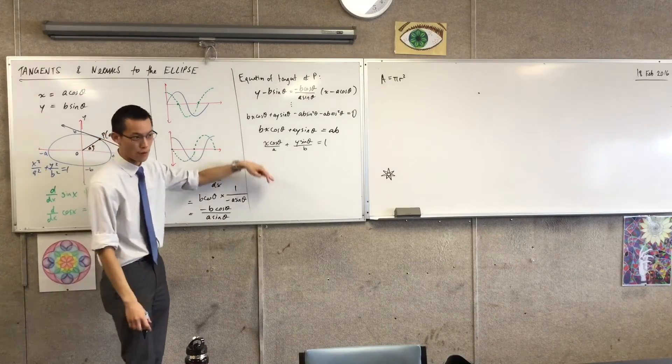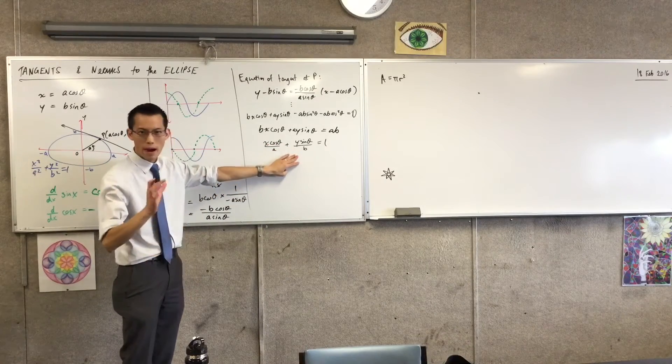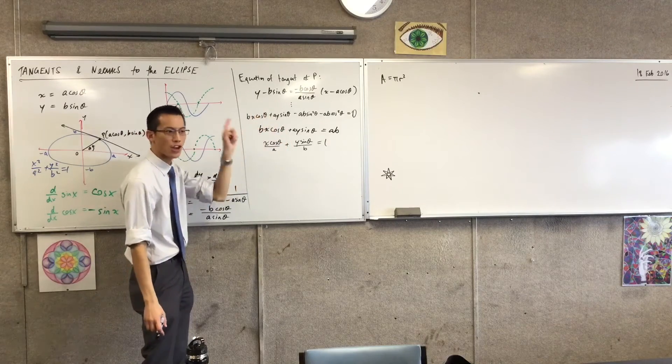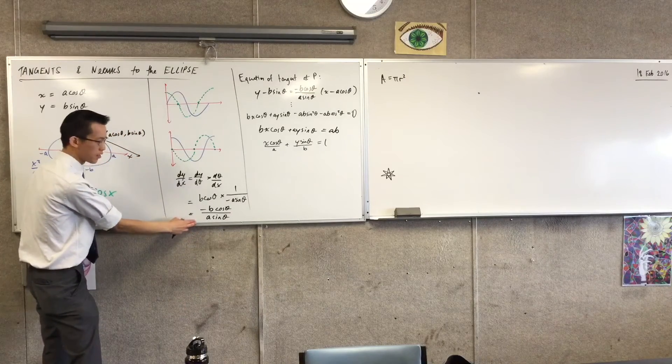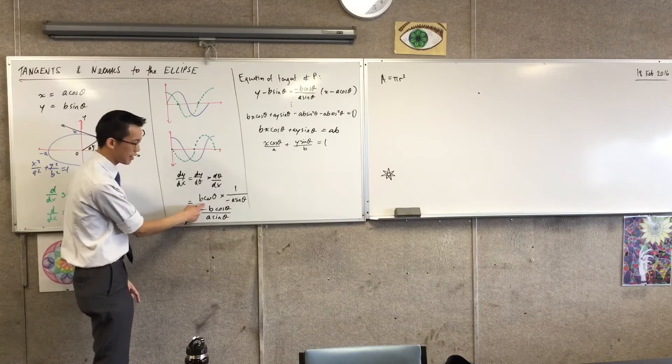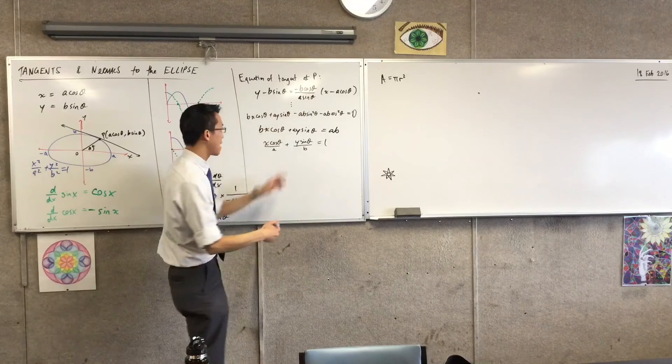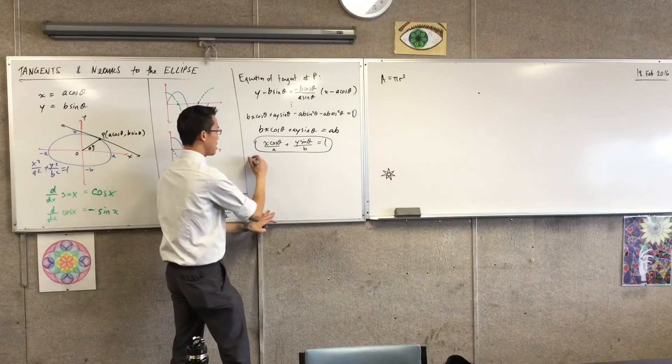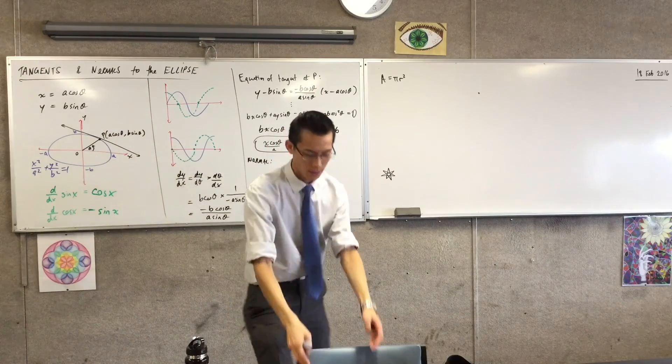Now, I won't actually just prove it. I'm just going to state it so that you know that you've got it right. This is not quite the same as the equation for the normal. Where would I have to change? How far would I have to go back up to change this working to get to normal? The derivative. Yeah, this derivative is not the one I want. I actually want the negative reciprocal of this, which would be a sin θ on b cos θ, right? And that would come in here. If you go ahead and you try that out, this is the equation of the tangent.